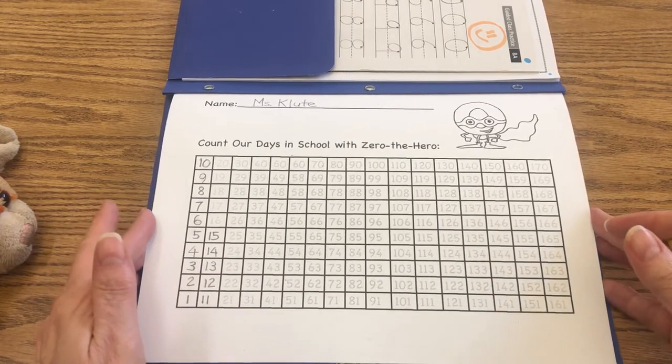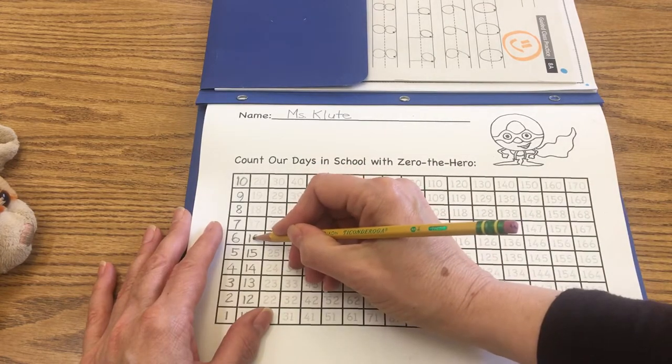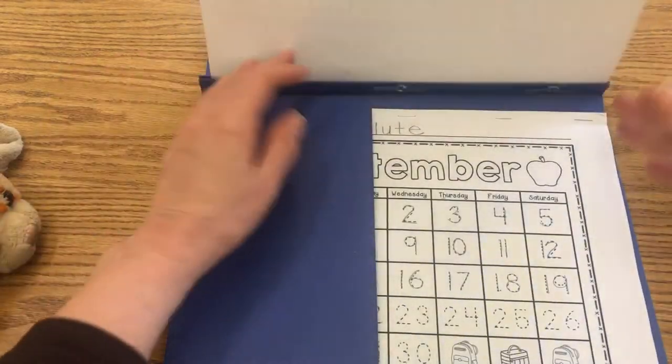We are working with Zero the Hero now in our math booklet. We're going to write the number 16 right here. Okay, so we're at our 16th day. We're counting our 16th day here.